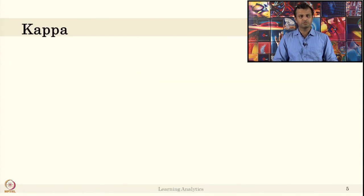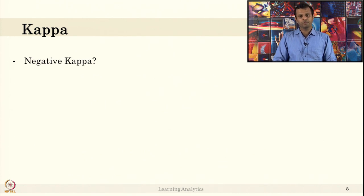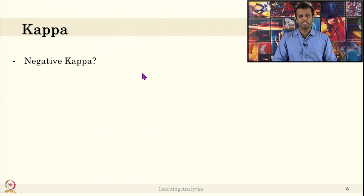So let us see — can we have a negative kappa? Think of a problem, create your own confusion table, and try to compute a negative kappa. If kappa is negative, it means the classifier is performing very poorly, even worse than chance.